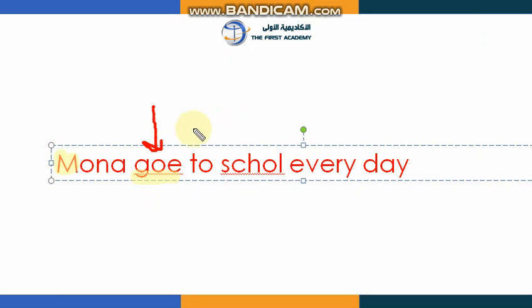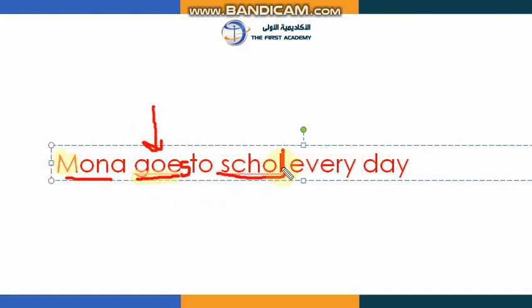Here the subject is singular and the verb has no 's', so what you are going to do is add 's' — it will be 'Muna goes to school.' Here is another mistake: we need to add a double 'o' so it becomes 'school.' And if you look at the end of the sentence, there is no punctuation mark, so you need to add a period.